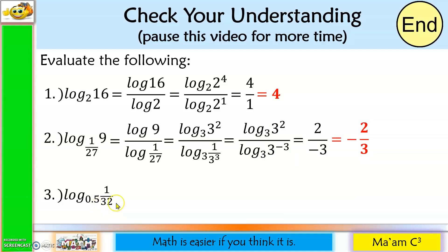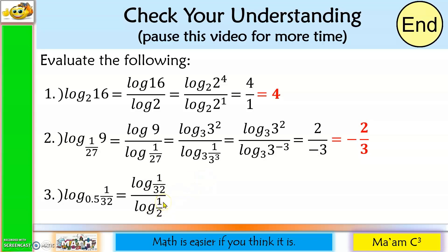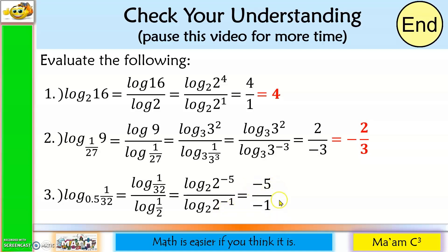Number 3: this will become the logarithm of 1 over 32 divided by the logarithm of 0.5. I'll express 0.5 as 1 half. Since I have 2 here, I'm going to express 32 as 2 to the fifth power. Bringing up 2 to the fifth, that will make the exponent negative. Bringing 2 up also makes the exponent negative. So 2 raised to negative 5 to the base 2 for 1 over 32, and 2 raised to negative 1 to the base 2 for 1 half. The answer in the numerator is negative 5 and in the denominator is negative 1. Negative 5 divided by negative 1 is positive 5.